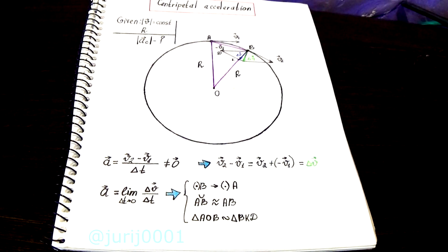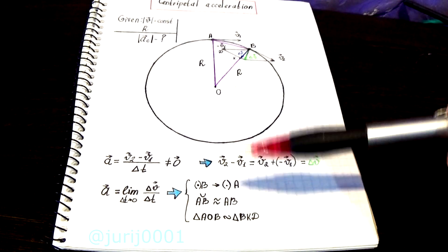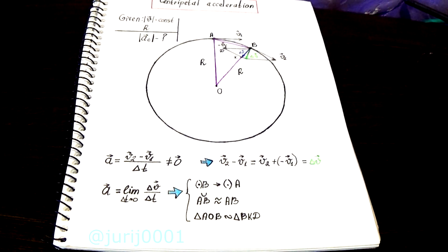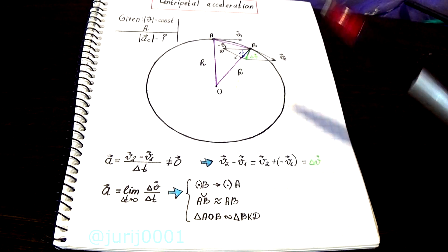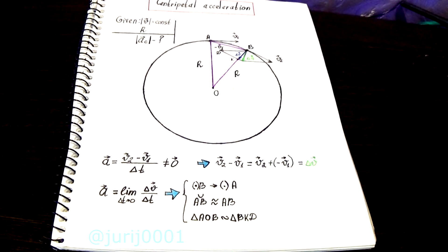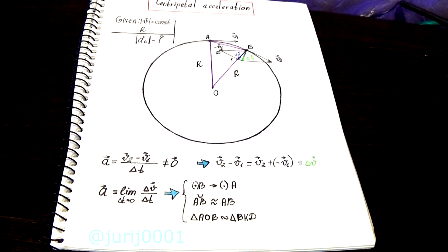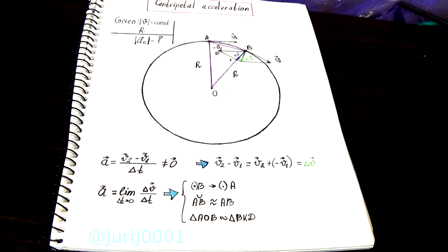If the time interval is very small, the point B will tend to point A. So the length of the arc AB will be equal to the length of the chord, and so the delta V will be directed to the center of the circuit.